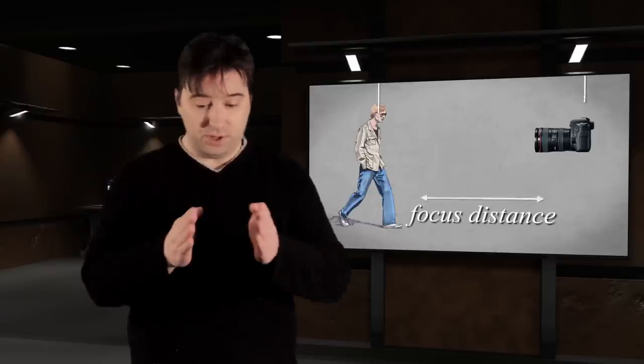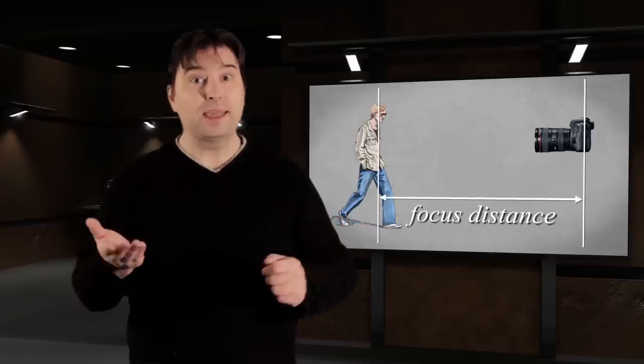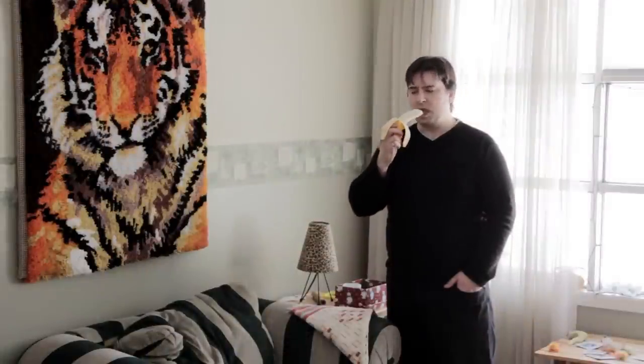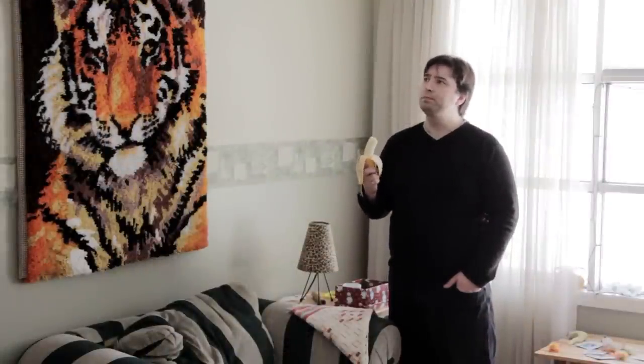Focus distance refers to the distance between the subject and the camera. When the subject is close to the camera, the focus range is very shallow. When the object is at a distance, the focus range is much greater.